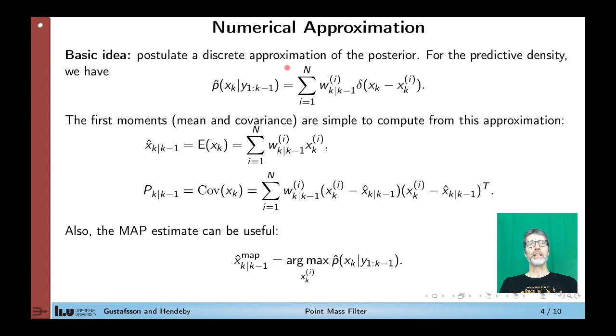So the key idea is to approximate the filtering and posterior density functions by p hat here as the weighted sum of particles. So we assume that we have a grid point of the state space called xk of i. We apply this kind of Dirac impulse density at this point and let it have an associated weight. So different points in the state space have different weights.